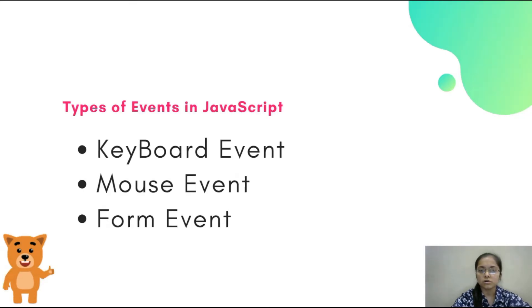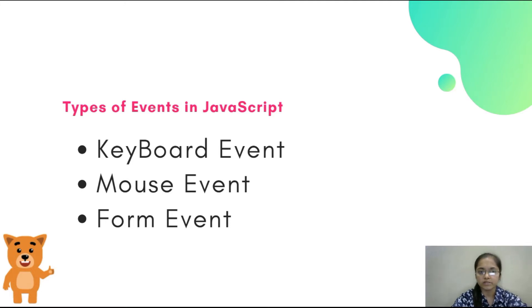There are three basic types of events in JavaScript: keyboard events, mouse events, and form events. Now let's see the types of keyboard, mouse, and form events.